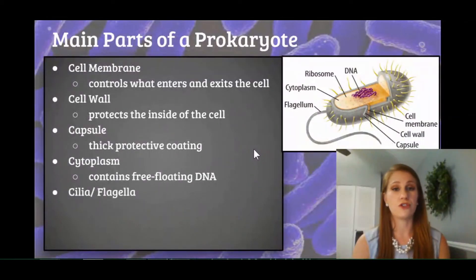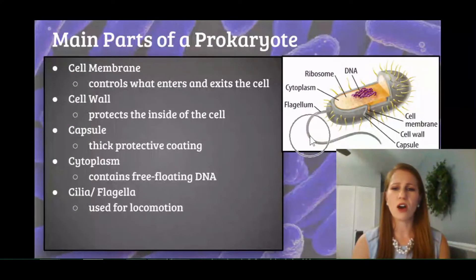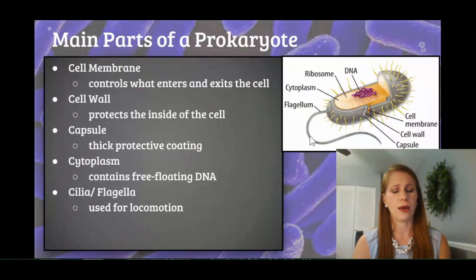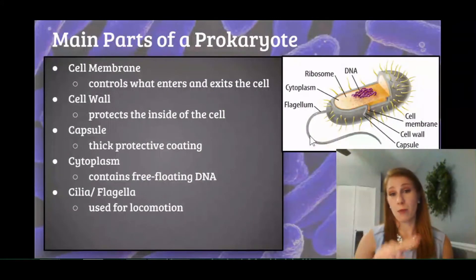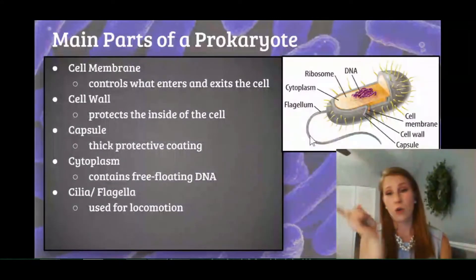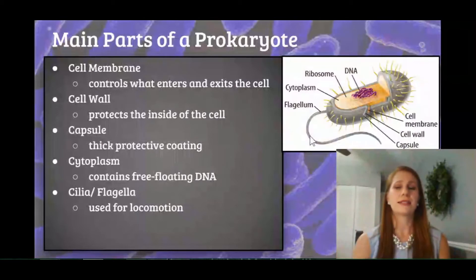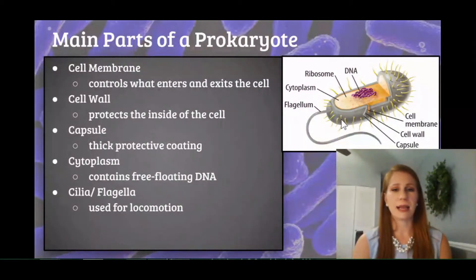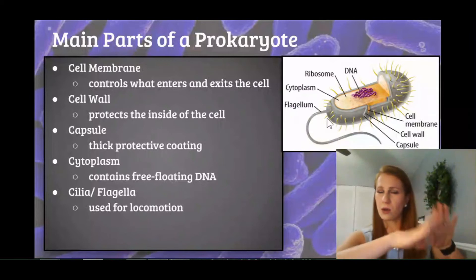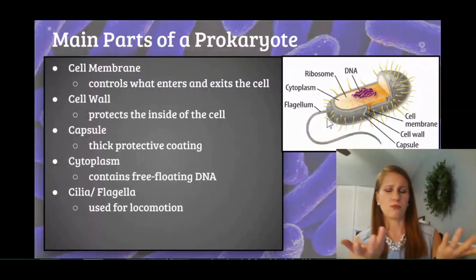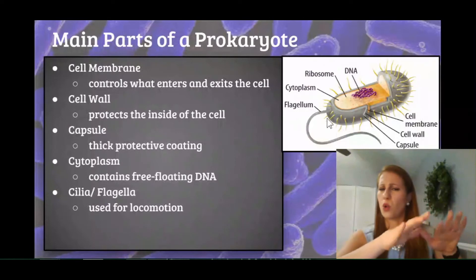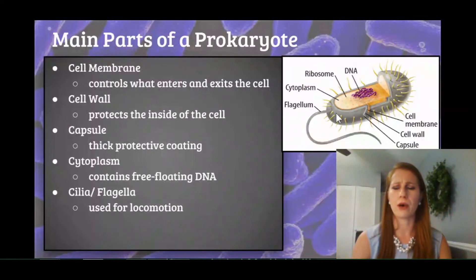We also have cilia or flagella, which are used for locomotion. We see here a long whip-like tail structure — that's a flagellum, and it works like a propeller, spinning around to help the bacterial cell move. Cilia do the same thing — they all beat as one, kind of like little paddles on the side of the prokaryote that help it travel through the liquid it's in.